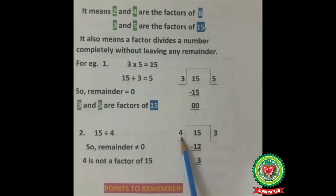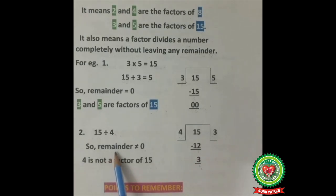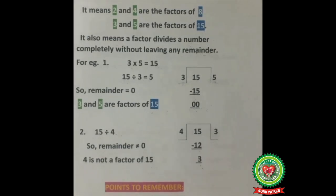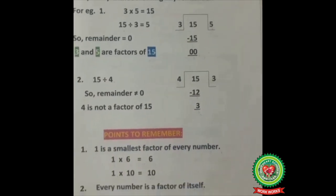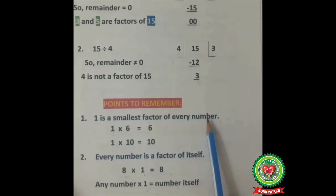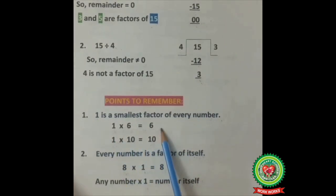Now, 15 divided by 4: 4 times 3 is 12, subtract — remainder is 3. Remainder is not equal to 0, so 4 is not a factor of 15. Now students, we will learn to find all factors of a number. But before that, you should revise divisibility rules, and there are some points to remember. First point: 1 is the smallest factor of every number.